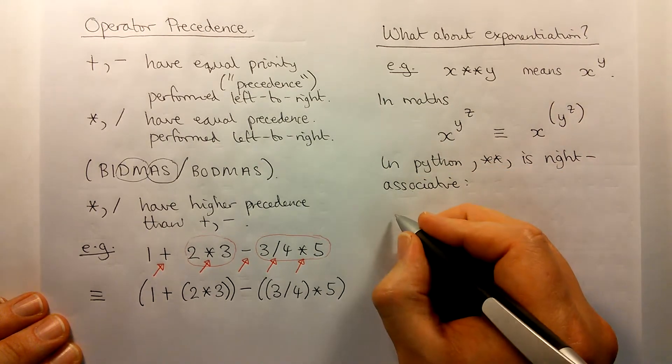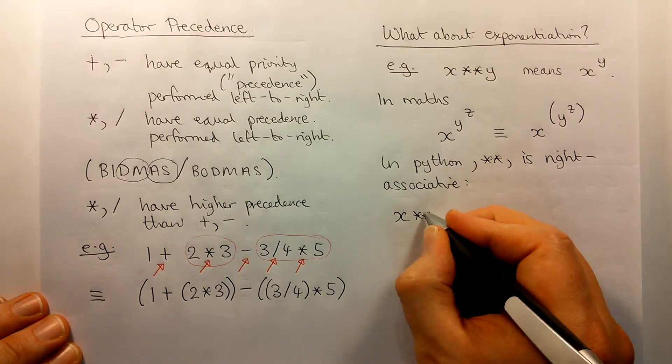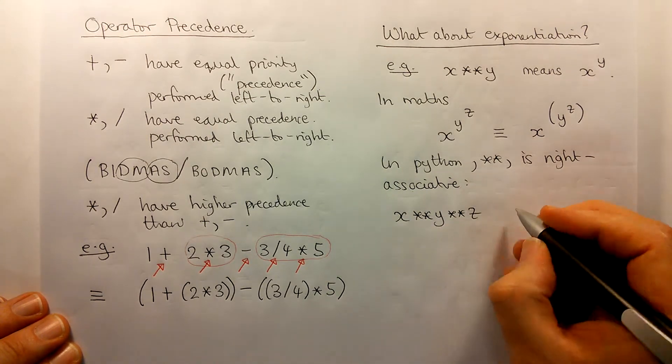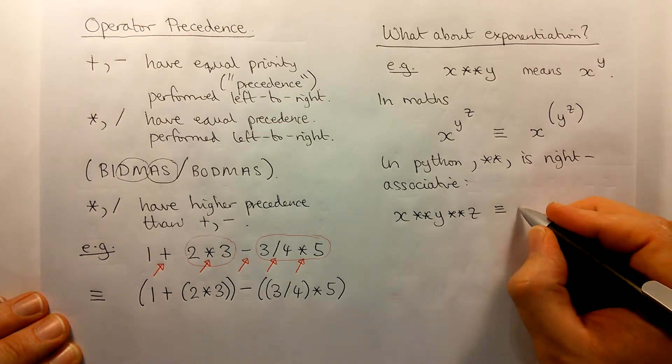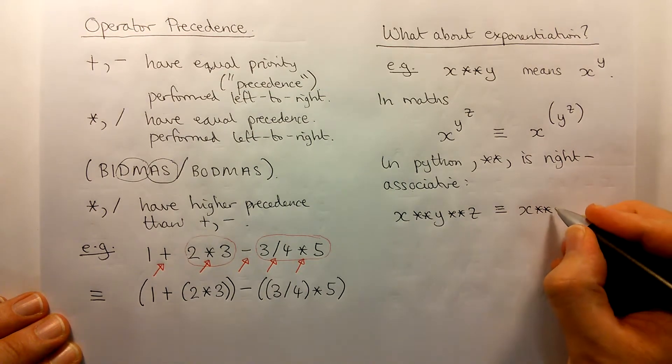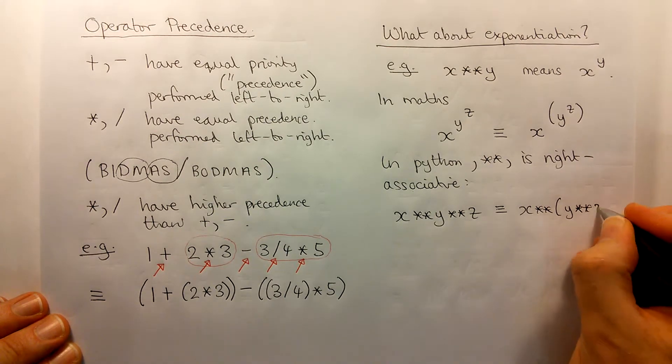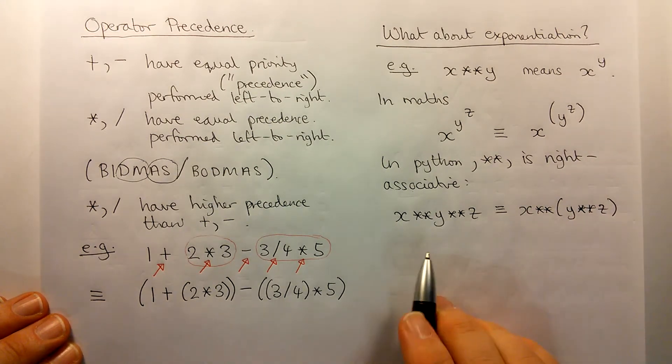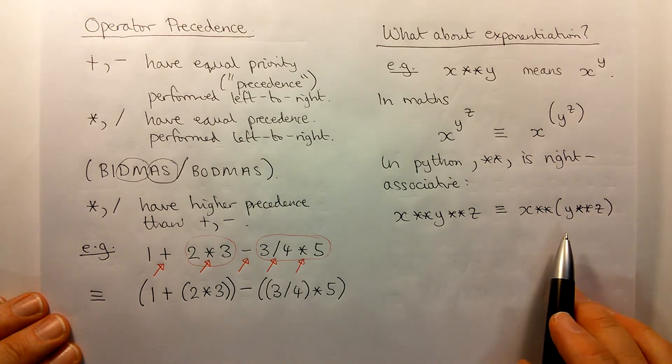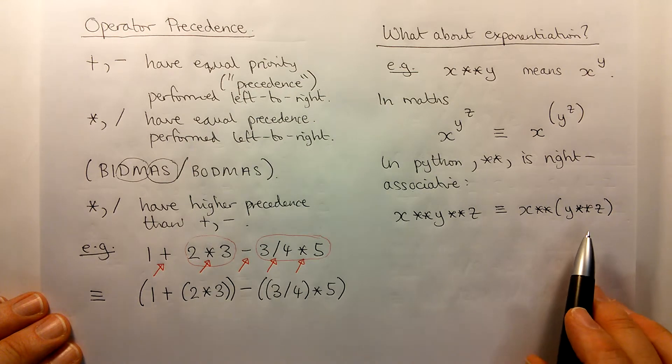So let's show how that would look in Python. If we exponentiate x to the y then to the z, what that really means is that we perform the rightmost operation first. So if we had a chain involving many exponentiations without any other operators, we would work from right to left.